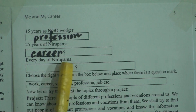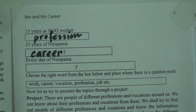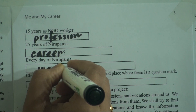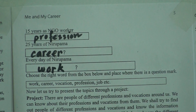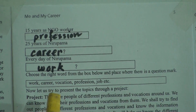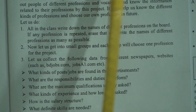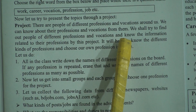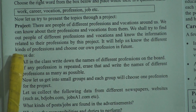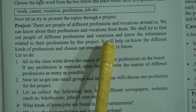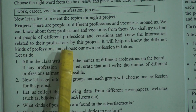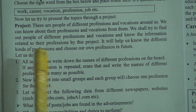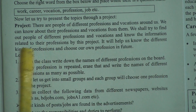Then, the everyday activities of Nirupoma are her work — the things which she does everyday. There is a project for you. There are people of different professions and vocations around us. We can know about their professions and vocations from them. We shall try to find out people of different professions and vocations and know the information related to their professions through this project. It will help us know the different kinds of professions and choose our own profession in future.